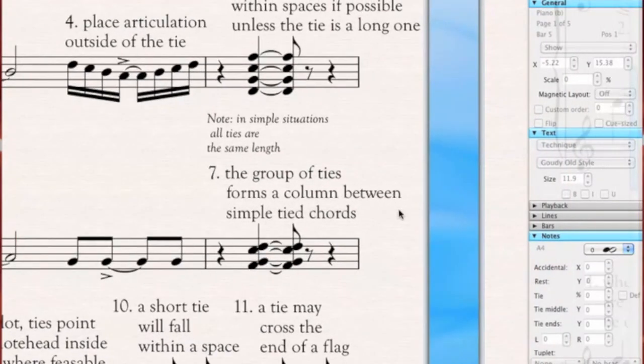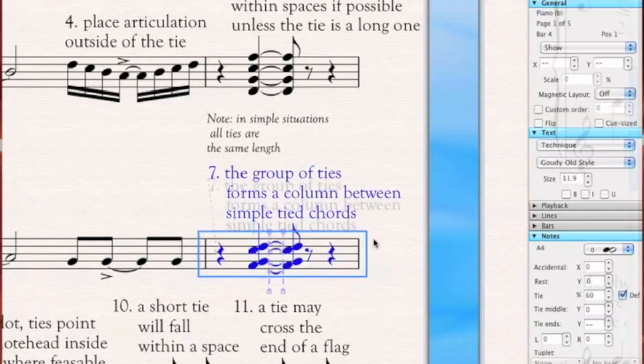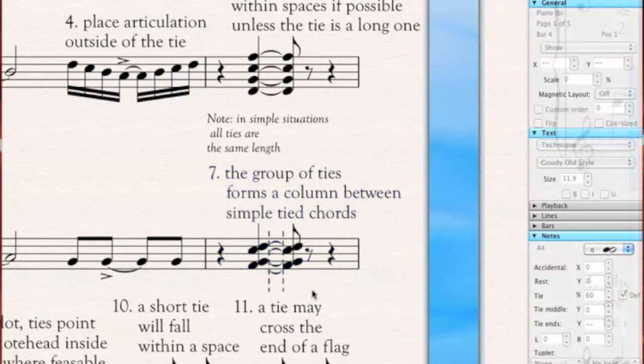The group of ties forms a column between simple tied chords. So here, you've got all these ties lined up, and you can draw a straight line down and see where they are. So here, that's what I want to show. You can draw a straight line. So that's what I mean by it forms a column.